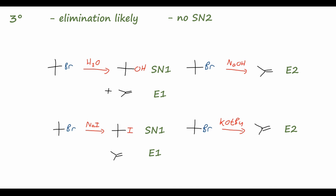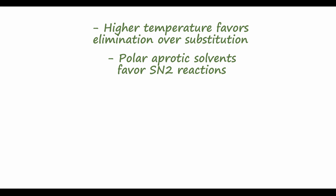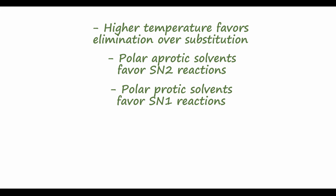A few last notes: higher temperature usually favors elimination reactions over substitution due to entropic considerations. So if you want more elimination product, just heat the reaction up. Also, polar aprotic solvents favor SN2 reactions by allowing the nucleophile to maintain its nucleophilicity, while polar protic solvents favor SN1 reactions by solvating the transition state and the leaving group, giving a faster unimolecular reaction.